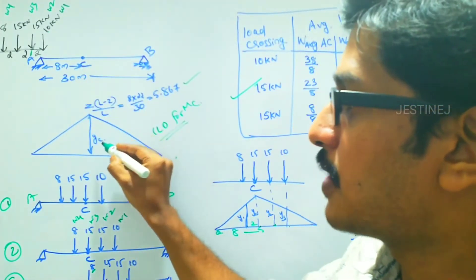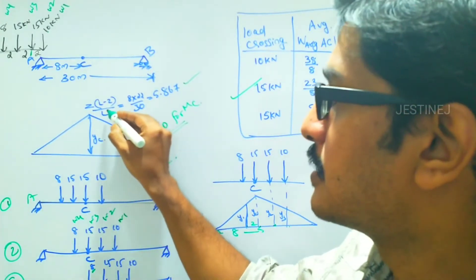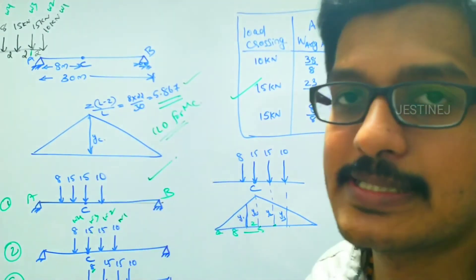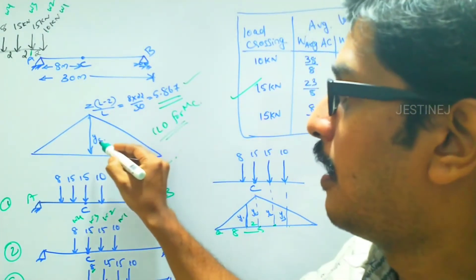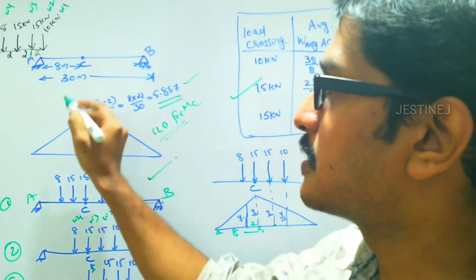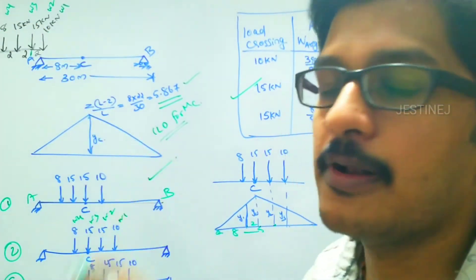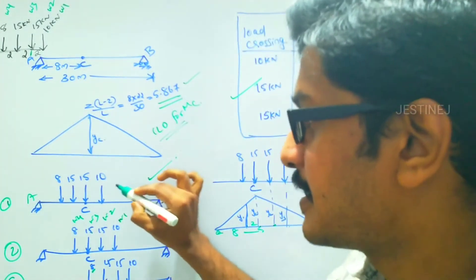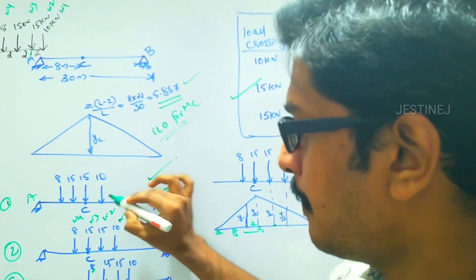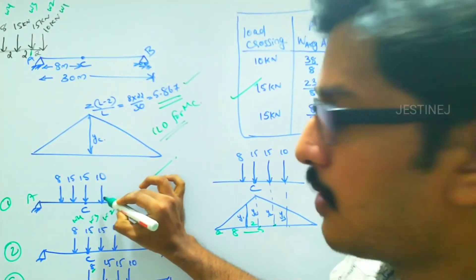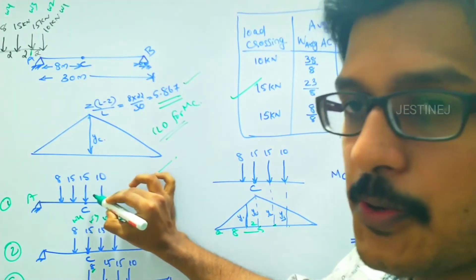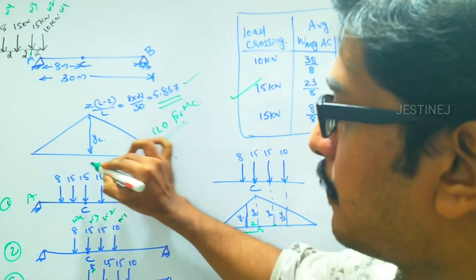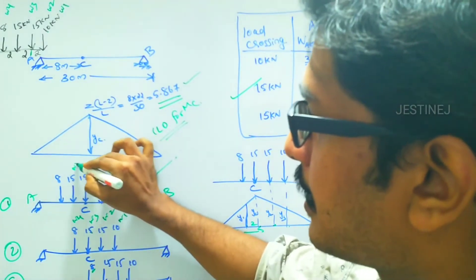With the help of a diagram: a simply supported beam with supports A and B, span 30 meters, with point C at 8 meters from support A. The loads are 10 kN leading, then 15, 15, and 8 kN, each 2 meters apart. We can find the ordinate at C using z/l × (l−z), giving yc = 5.867. We now check which load at point C gives the maximum bending moment. First possibility: the 10 kN load has crossed point C and 15 kN is acting at C.